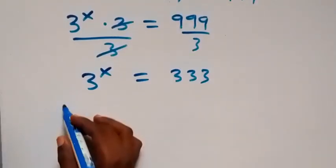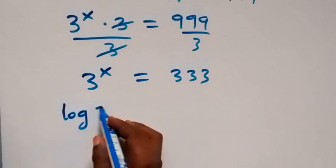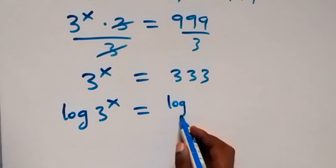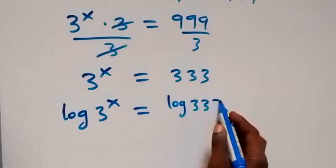Now we can take the log on both sides. Then we have log 3 raised to the power x equals to log 333 here.